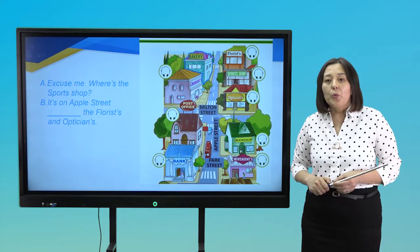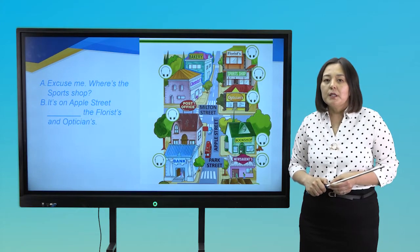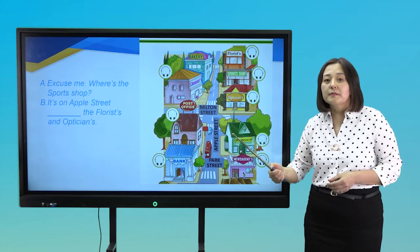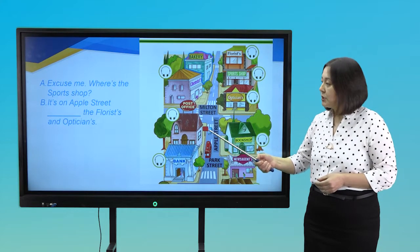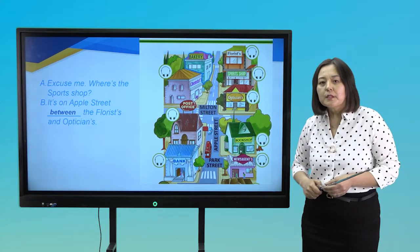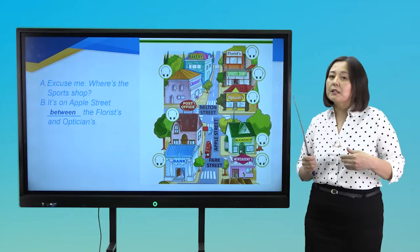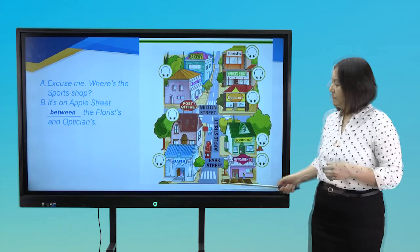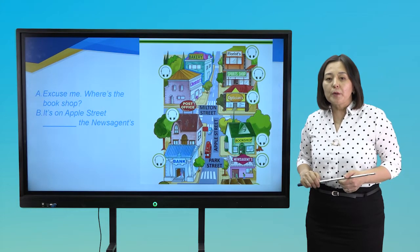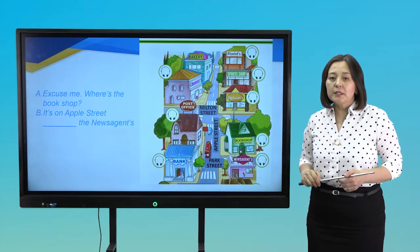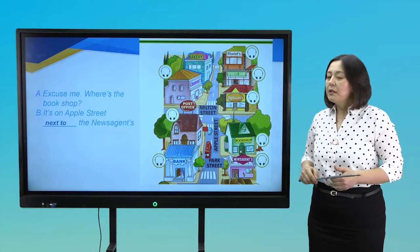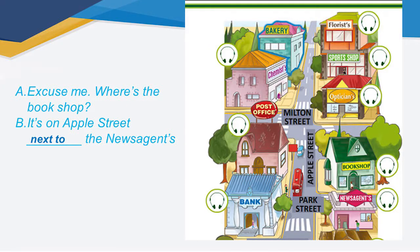Excuse me, where is the sports shop? It is on Apple Street, between the florist and optician. Excuse me, where is the book shop? It is on Apple Street, next to the newsagent.